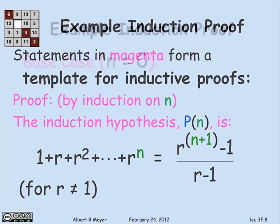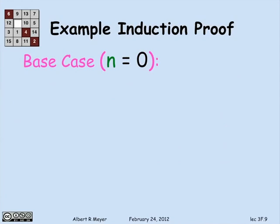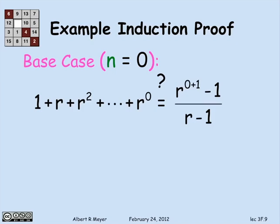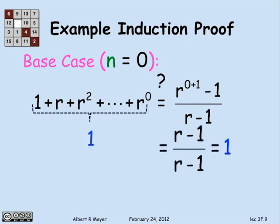Having stated the induction hypothesis, the first thing we have to do is work on the base case: prove it for n equals 0. The sum on the left when n is 0 is just 1, because it's going from r to the 0 to r to the 0. The right-hand side is r minus 1 over r minus 1, which is 1 since r is not 1. So it checks out — the case n equals 0 has been proved.